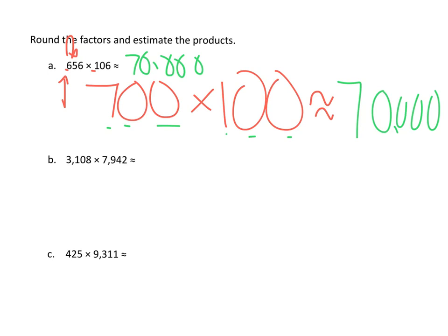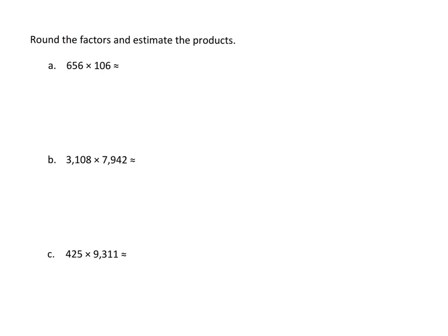So for our next problem here, we have 3,108 times 7,942 is about how many? So again, about how many? We are estimating. If I have 3,108, my largest place value is the 3 in the thousands and the 7 in the thousands.